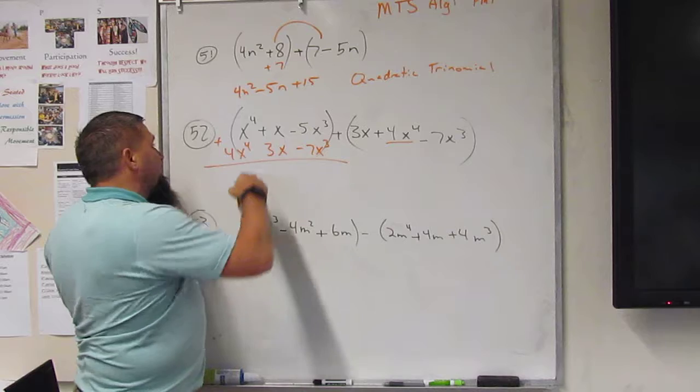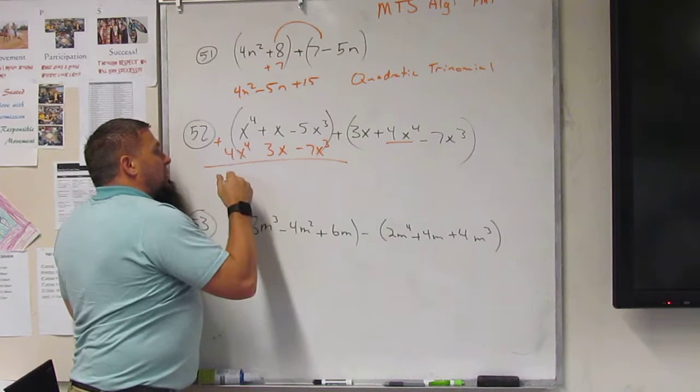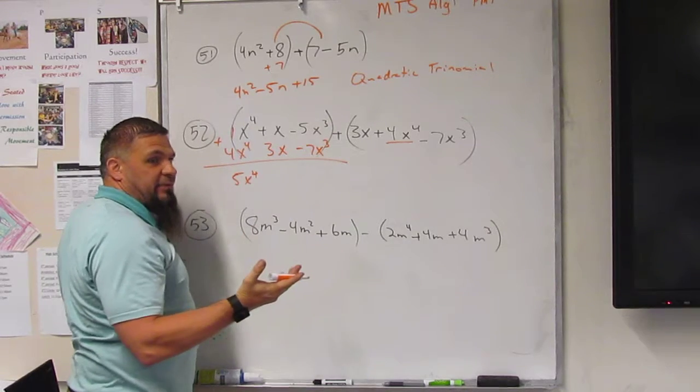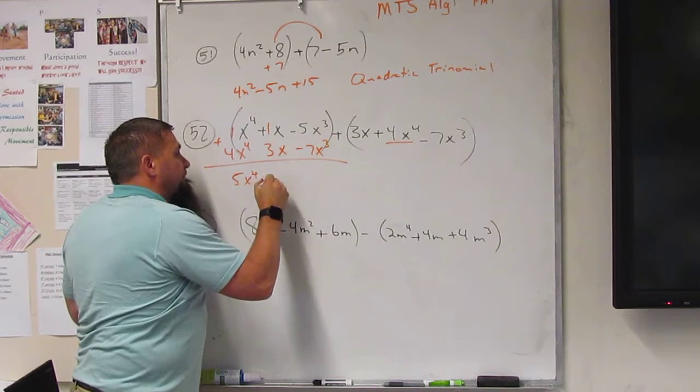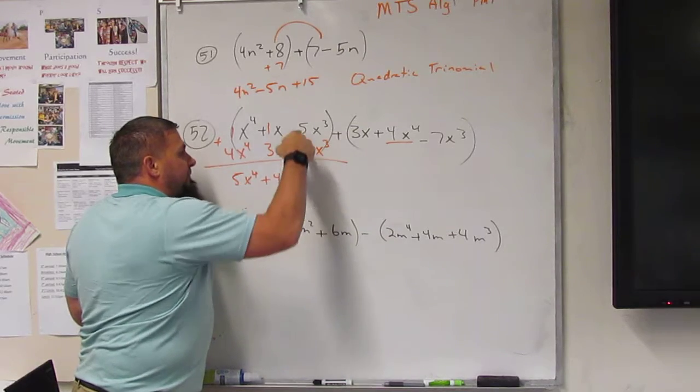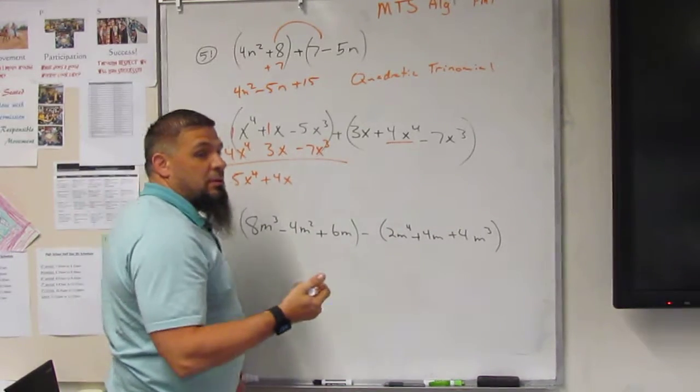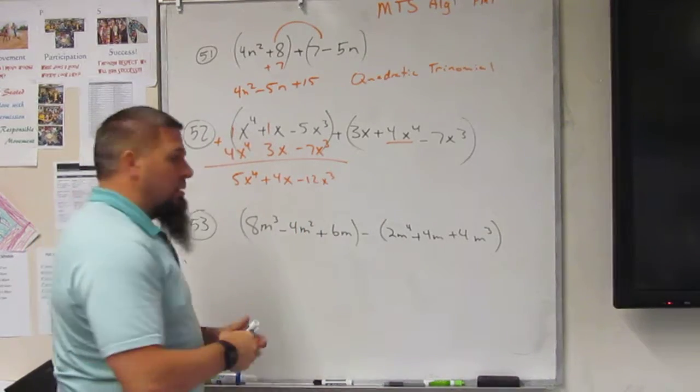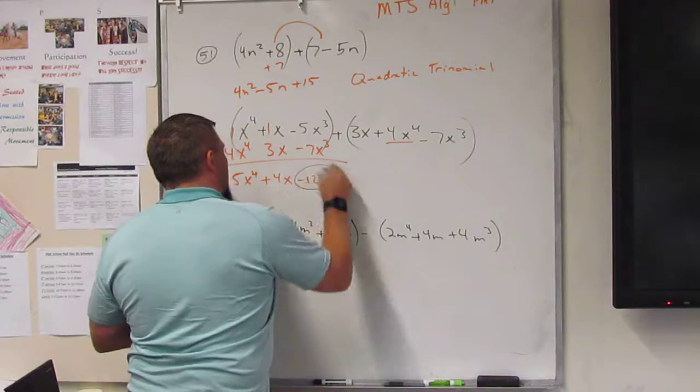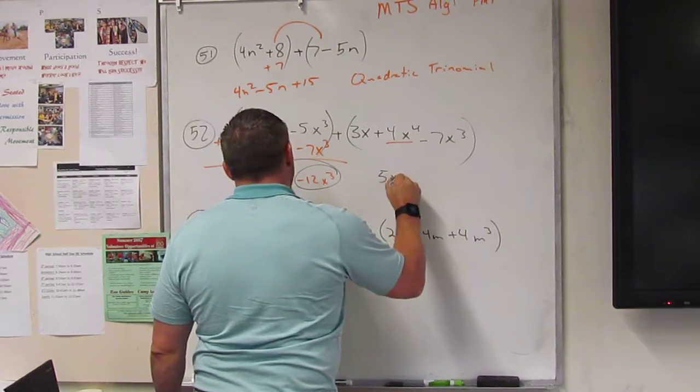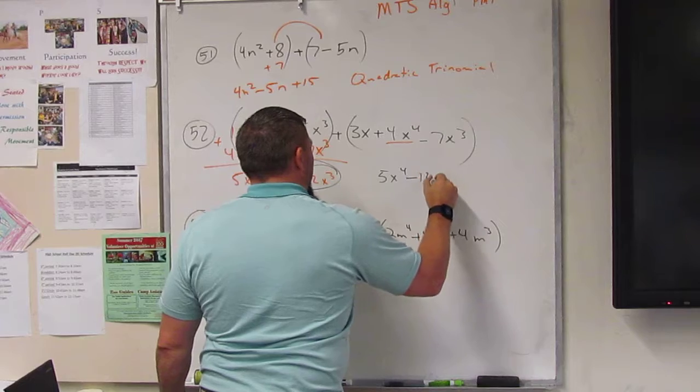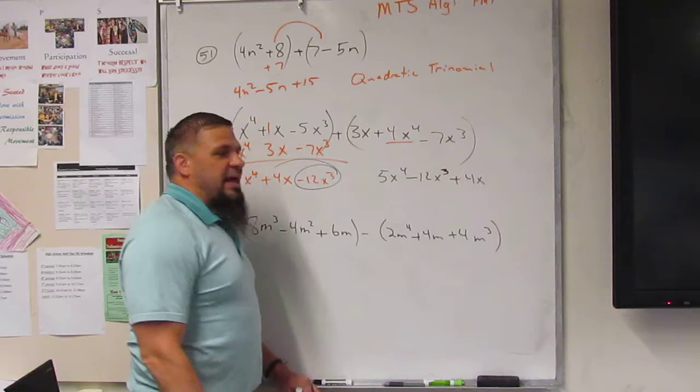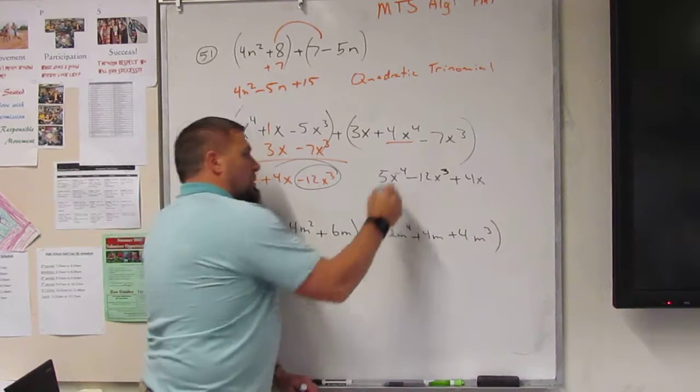Now when I put them down, I'm going to put them down, just come on down. 1 plus 4 is 5. 1 plus 3? 4. And 5 plus 7, but they're negatives. Negative 4. Now I've got to put them in order. So that means this goes ahead of that one. So that's 5x to the 4th minus 12x cubed plus 4x. And we call that a, what's that called?